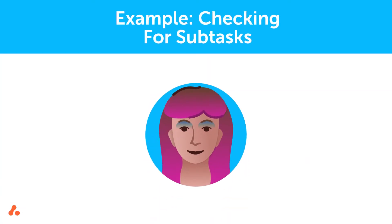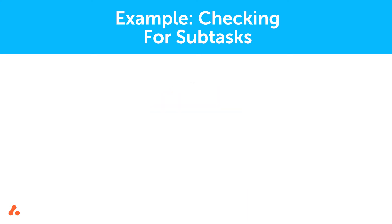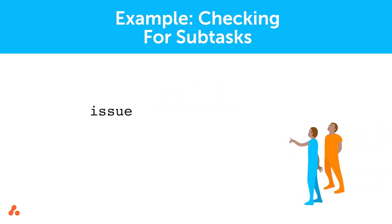Let's say that Violet from Great Adventure needs to use a Jira Expression that checks whether an issue contains subtasks. She first chooses the variable, issue. Then she uses the subtasks property. Much like the comments example used earlier, Violet uses the length expression of greater than zero. When this script is executed, it will check to see if there are one or more subtasks on an issue.